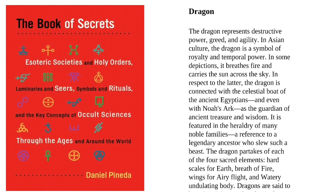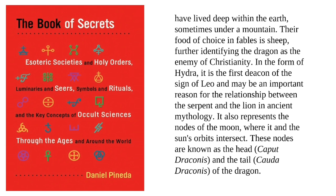The dragon partakes of each of the four sacred elements: hard scales for earth, breath of fire, wings for air and flight, and a watery undulating body. Dragons are said to have lived deep within the earth, sometimes under a mountain. Their food of choice in fables is sheep, further identifying the dragon as the enemy of Christianity. In the form of Hydra, it is the first decan of the sign of Leo, and may be an important reason for the relationship between the serpent and the lion in ancient mythology. It also represents the nodes of the moon where it and the sun's orbits intersect. These nodes are known as the head — Caput Draconis — and the tail — Cauda Draconis — of the dragon.